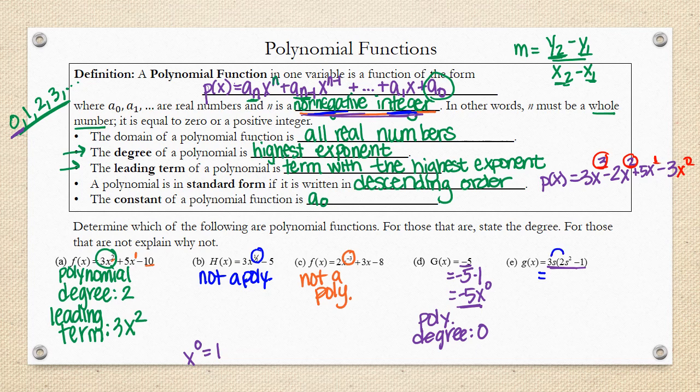So, if I do that, we get 3s times 2s squared, which is 6s to the 3rd minus 3s. So, we can see that this is a polynomial because all of the different exponents are positive integers or non-negative integers, I mean. And the degree of this is 3.